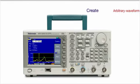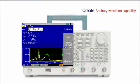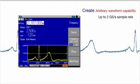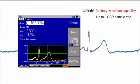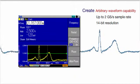Or create your own unique waveform. The built-in ARB delivers up to 2 gigasamples per second sampling rate and 14-bit amplitude resolution.